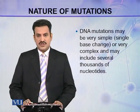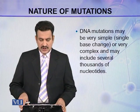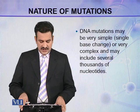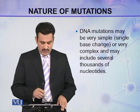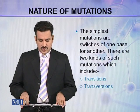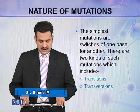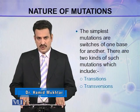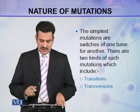DNA mutations may be very simple, including a single base change, or they may be very complex, including several thousands of nucleotides. The simplest mutations are switches of one base for another. There are two kinds of such mutations: transitions and transversions.